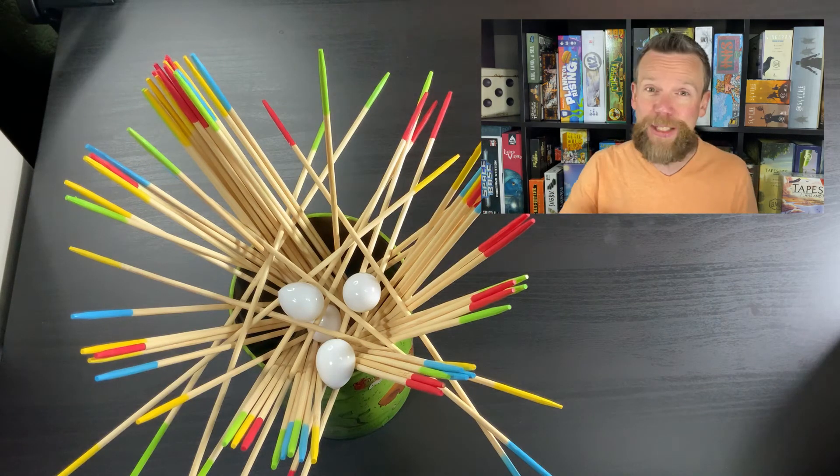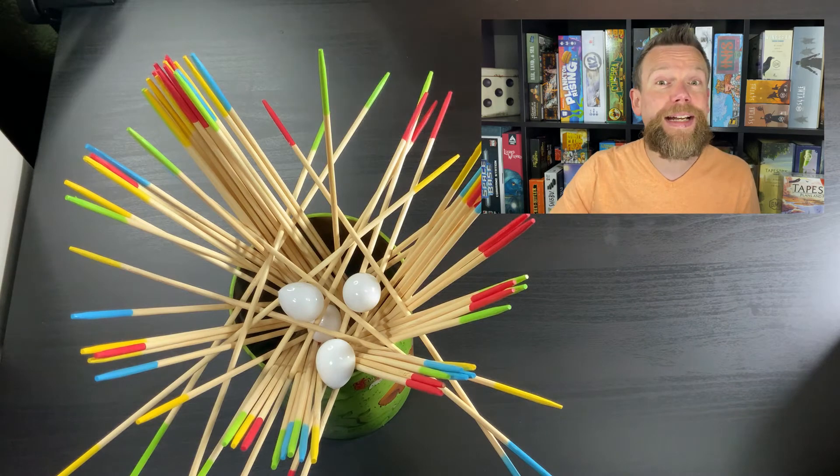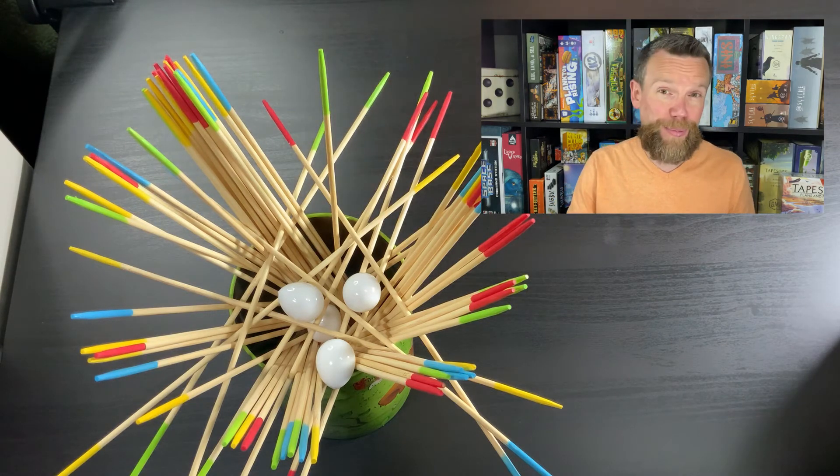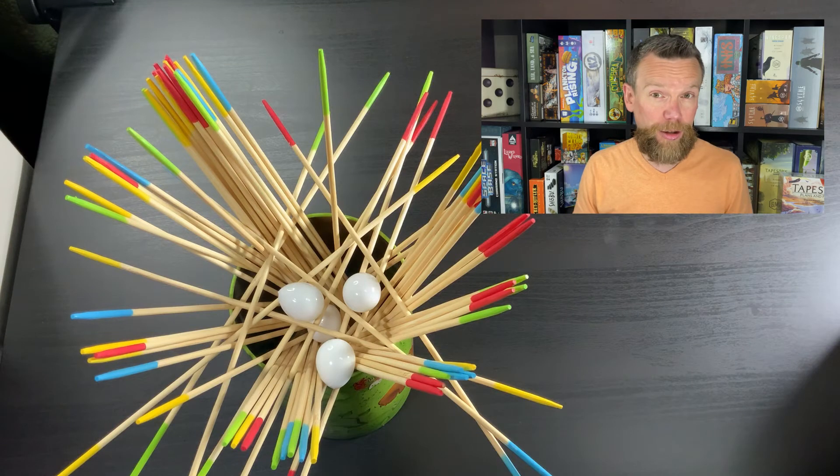But if you knock one of the sticks off or your stick falls off as you're placing it, you place that back on the nest, but your turn is done. So, you don't get to place an egg in that case, regardless of whether you managed to draw a stick that had the same color on both ends.